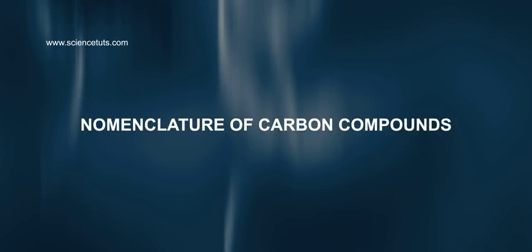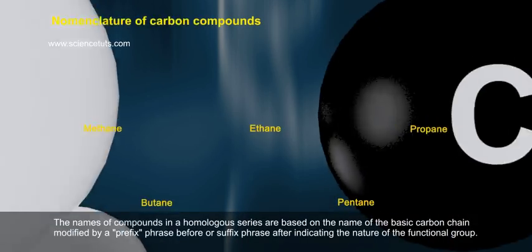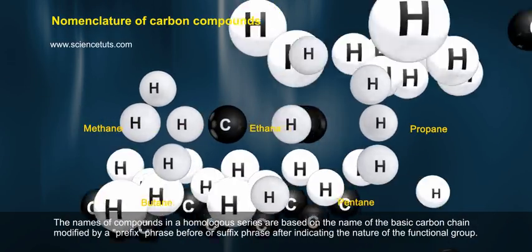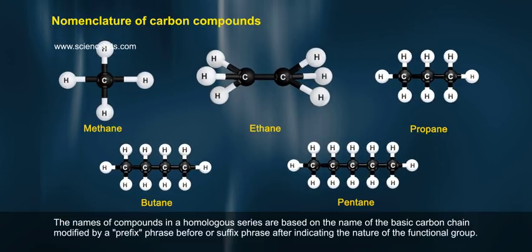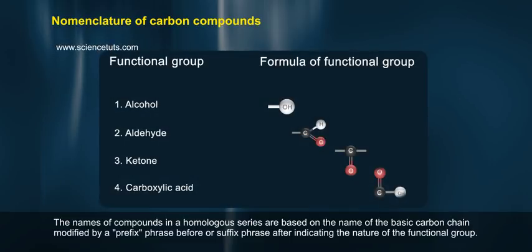Nomenclature of Carbon Compounds. The names of compounds in a homologous series are based on the name of the basic carbon chain modified by a prefix phrase before or suffix phrase after indicating the nature of the functional group.